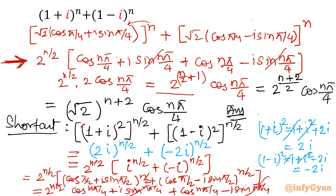The result is 2 raised to the power (n+2) over 2 times cos(nπ/4) — the same thing. I hope you like this video. It looks a bit complicated but it is not. You will see and then you will do it. Thank you so much. We will meet in the next mathematical video. Please do subscribe to my channel. Goodbye, bye bye.